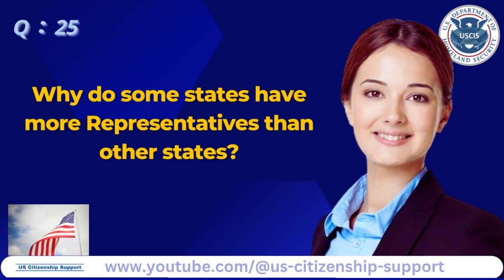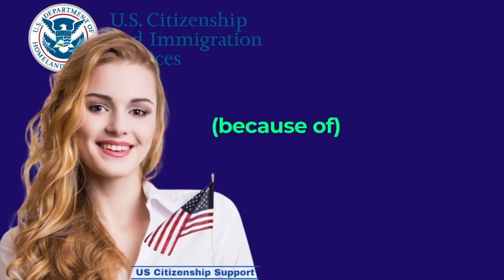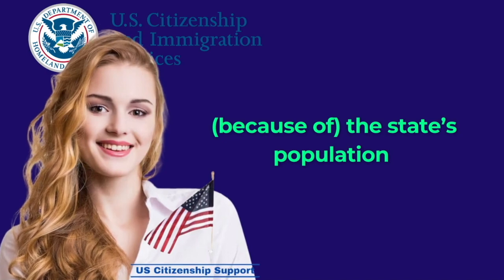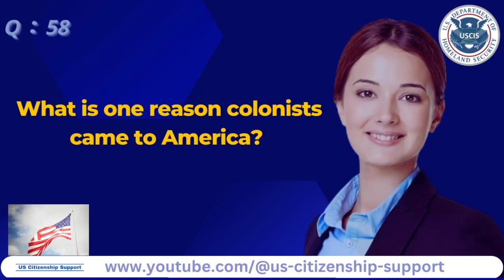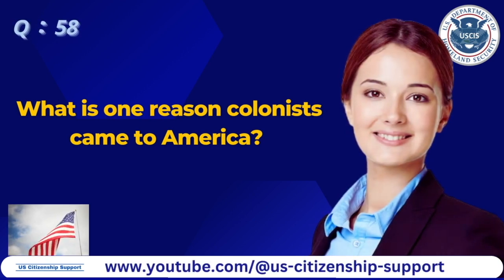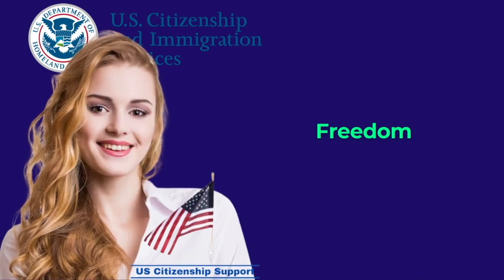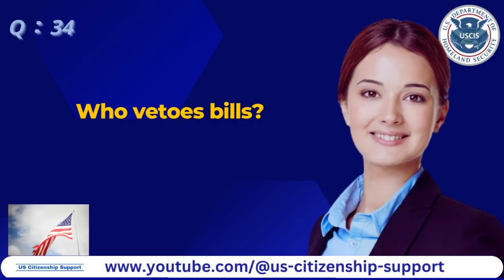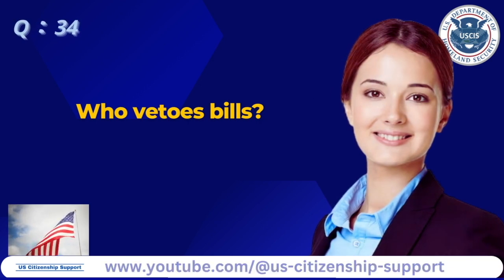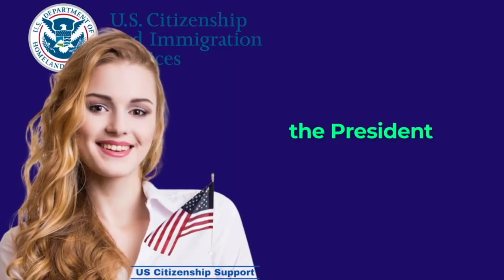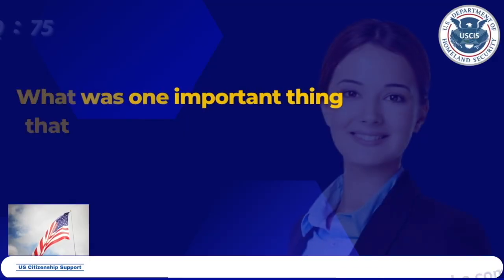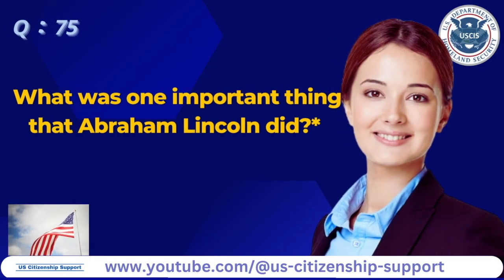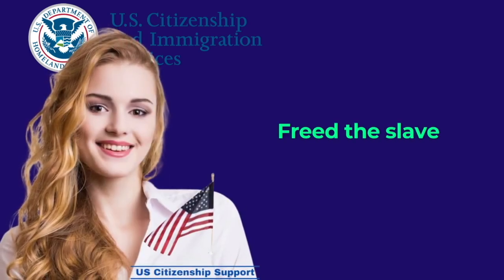Why do some states have more representatives than other states? Because of the state's population. What is one reason colonists came to America? Freedom. Who vetoes bills? The president. What was one important thing that Abraham Lincoln did? Freed the slaves.